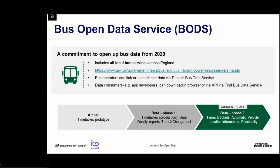A brief history: in 2018 we began the alpha service providing timetables data. We then moved to phase one of the beta service, enabling operators to provide timetables data to data consumers and receive data quality reports back. The current phase — beta phase two — is the fully fledged service where you can also provide fares, ticketing data, automatic vehicle location information in real time, and punctuality, which is most relevant to today's discussion.